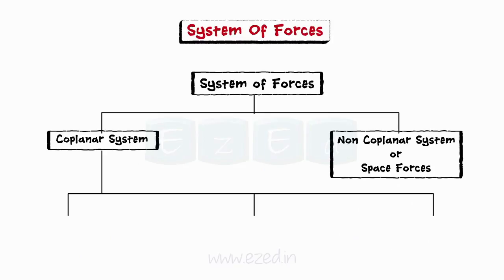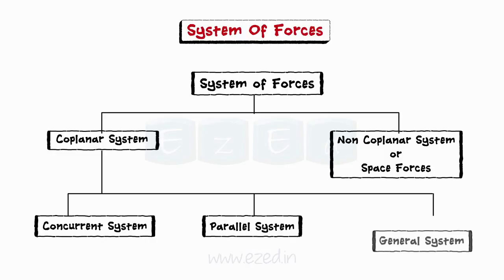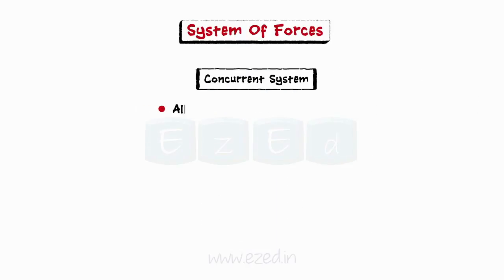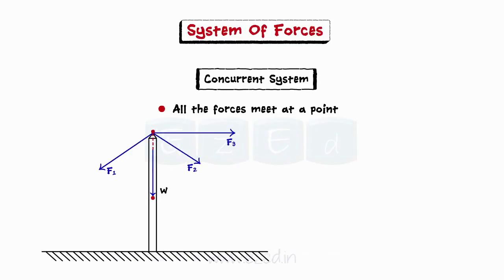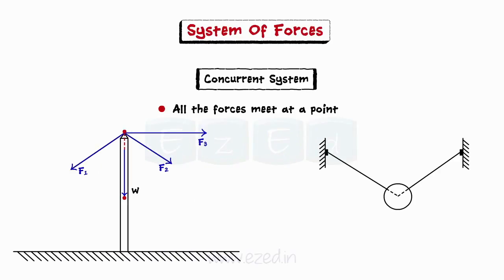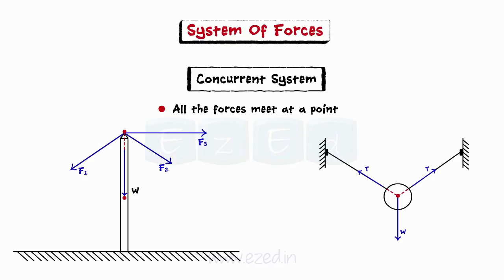Coplanar systems are divided into three types: concurrent, parallel, and general force systems. In a concurrent system, all the forces meet at a point. Consider an electric pole supporting heavy electric cables — if F1, F2, F3 are the forces in the cables and W is the weight of the pole, these forces form a concurrent system. Similarly, a bob hanging from two strings has tensional forces in each string and the weight of the bob acting vertically downwards — these three forces together form a concurrent force system.